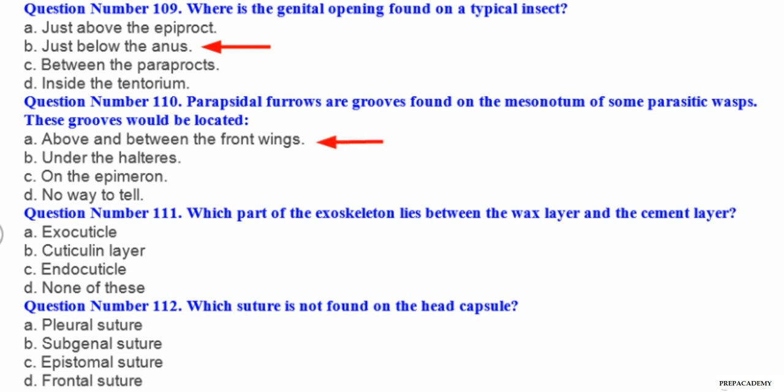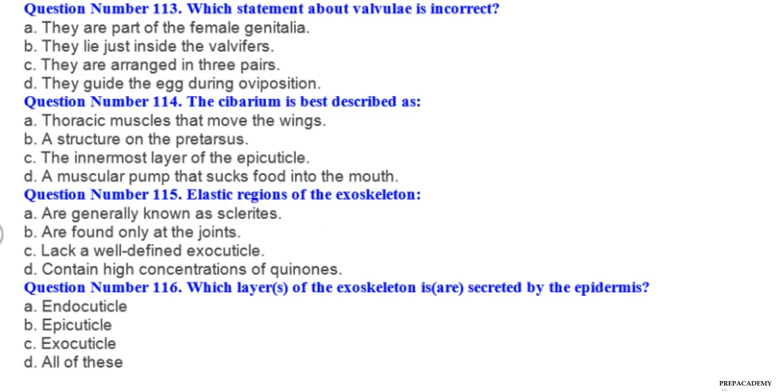Question number 111. Which part of the exoskeleton lies between the wax layer and the cement layer? A exocuticle, B cuticulin layer, C endocuticle, D none of these. Question number 112. Which suture is not found on the head capsule? A pleural suture, B subgenal suture, C epistomal suture, D frontal suture.